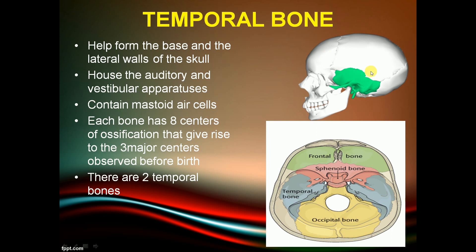The temporal bone helps form the base of the skull and the lateral wall of the skull. It houses the auditory and vestibular apparatuses and contains mastoid air cells. Each bone has eight centers of ossification giving rise to three major centers observed before birth. There are two temporal bones.